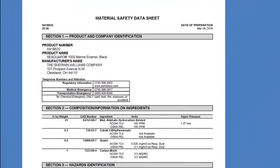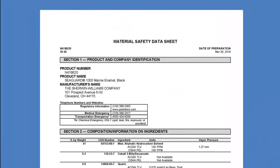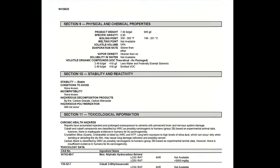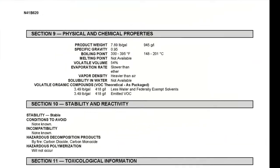The first place to look is the material safety data sheet or safety data sheet. MSDS or SDS refer to the same document. It contains materials and ingredient information as well as ways to safely handle and store the material. The physical and chemical properties section of an MSDS or SDS will typically have VOC information. This is usually section 9.